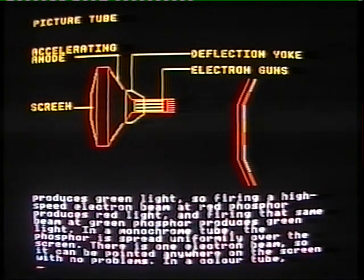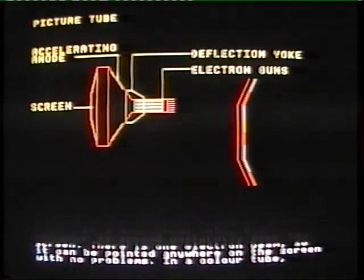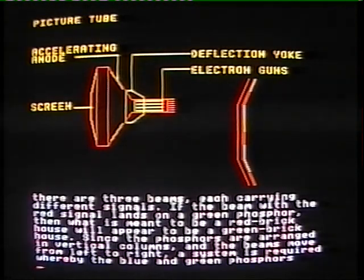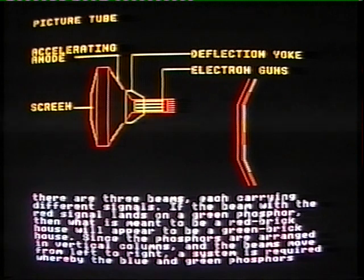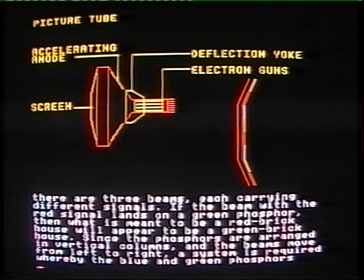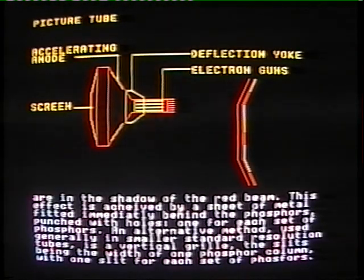In a monochrome tube, the phosphor is spread uniformly over the screen and there is one electron beam, so it can be pointed anywhere with no problems. In a colour tube, there are three beams each carrying different signals. If the beam with the red signal lands on a green phosphor, then what is meant to be a red brick house will appear to be a green brick house. Since the phosphors are arranged in vertical columns and the beams move from left to right, a system is required whereby the blue and green phosphors are in the shadow of the red beam.